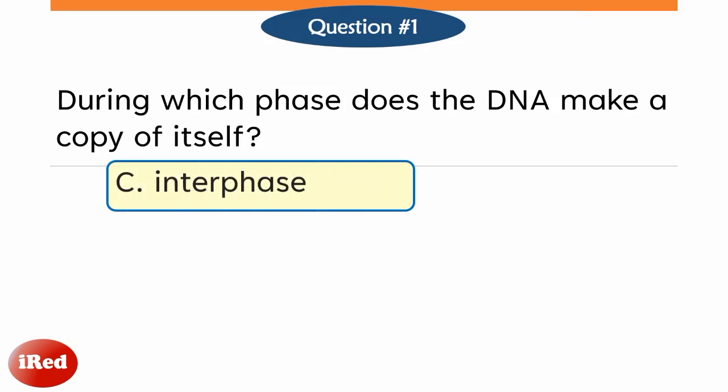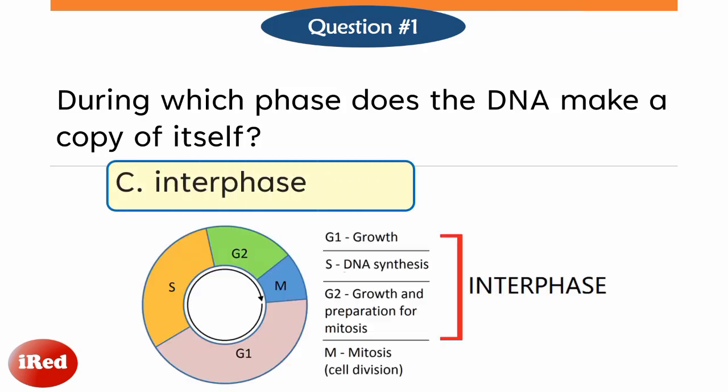The correct answer is letter C, interphase. Specifically, the interphase has three stages. First, the first gap phase where the cell grows. Second, the S or synthesis phase, and in this stage the DNA replicates. The third stage is the second gap phase where the cell prepares for mitosis.